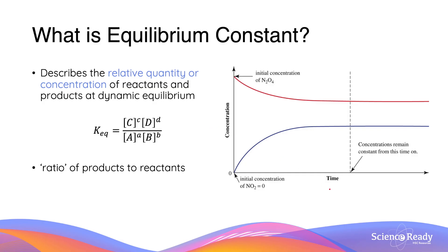Remember that on the concentration versus time graph, the reactions are at equilibrium when the concentrations of all chemicals remain unchanged, as we can see on the right-hand side. Although they remain unchanged, the concentration of reactants and products are not equal. In fact, at most equilibrium systems, the concentration of reactants and products are almost never equal.